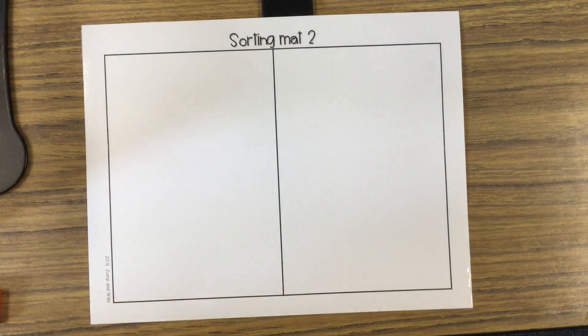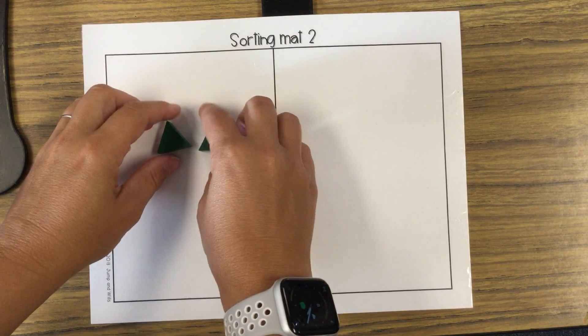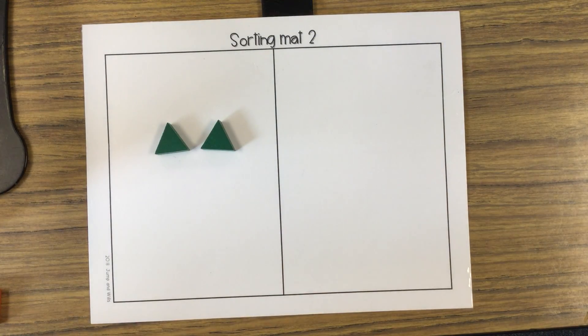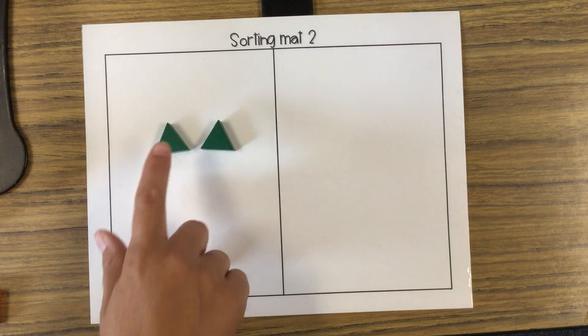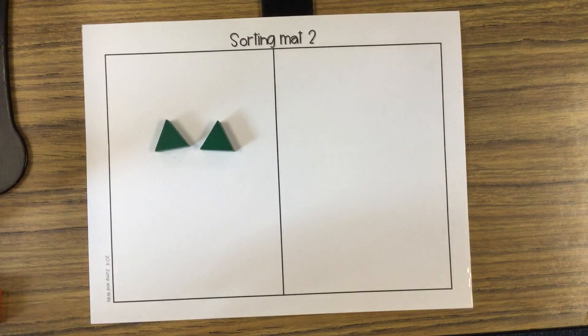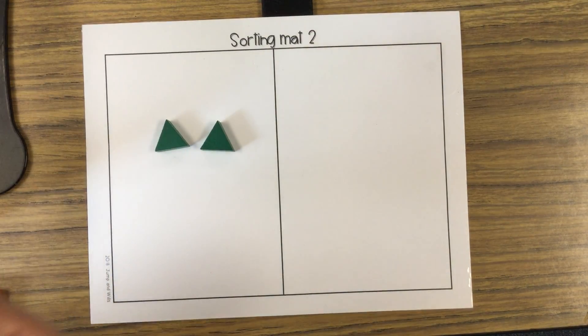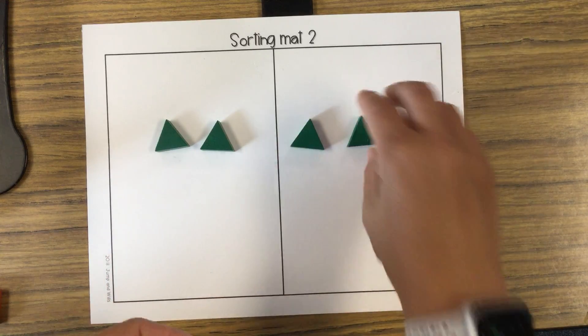Okay, and so then what are those? Those are triangles. And let's count how many. One, two. And so then we would match them. So how many triangles would we need on the other side? Two.